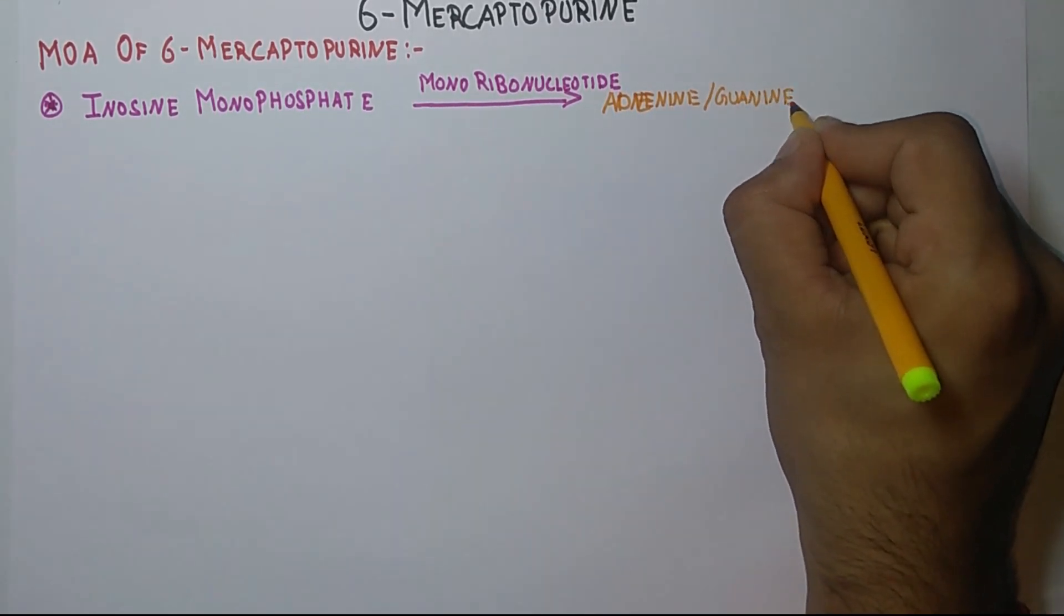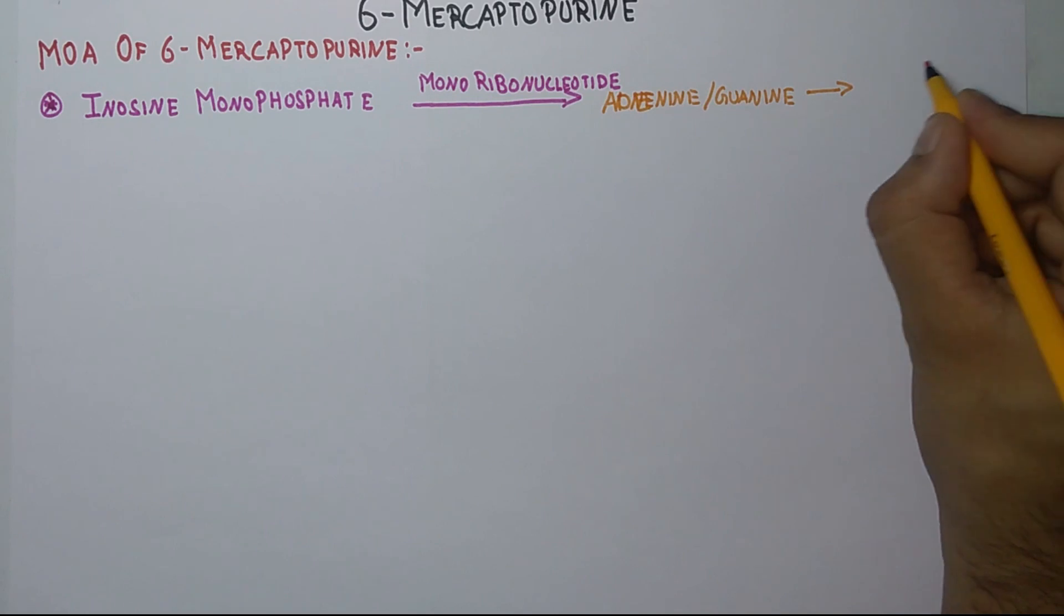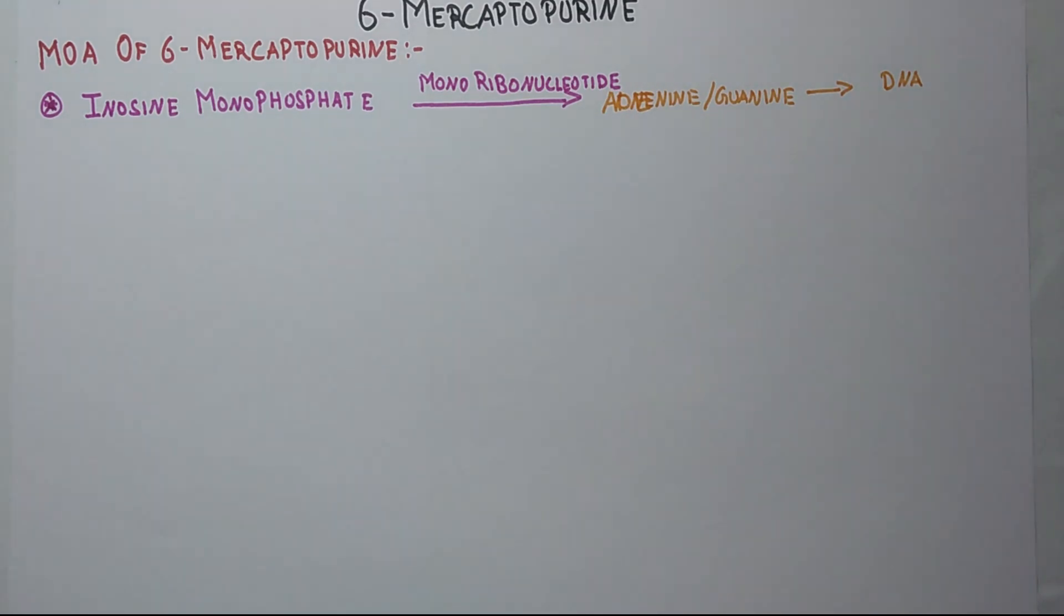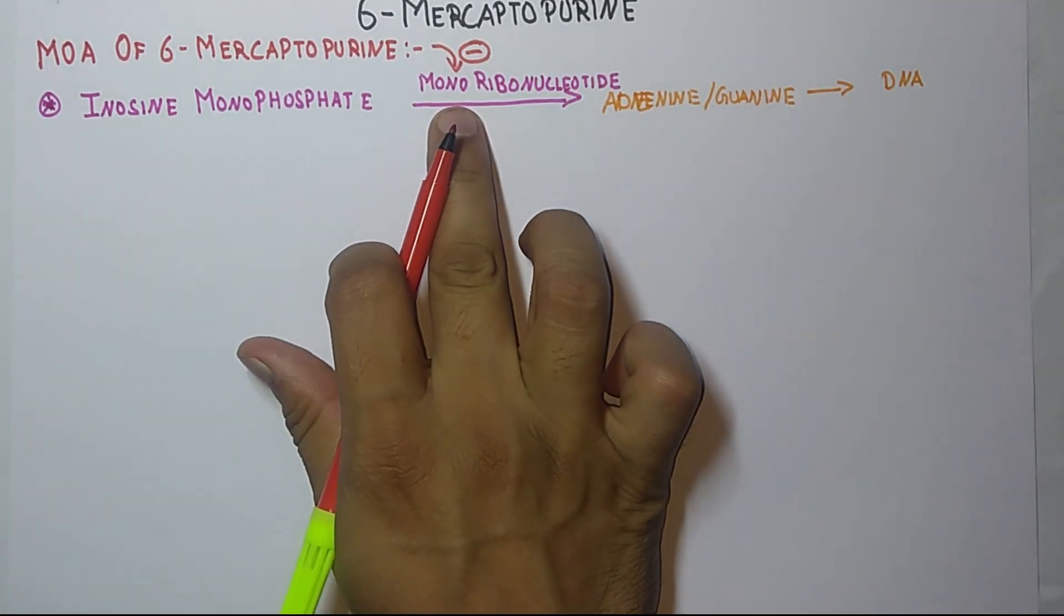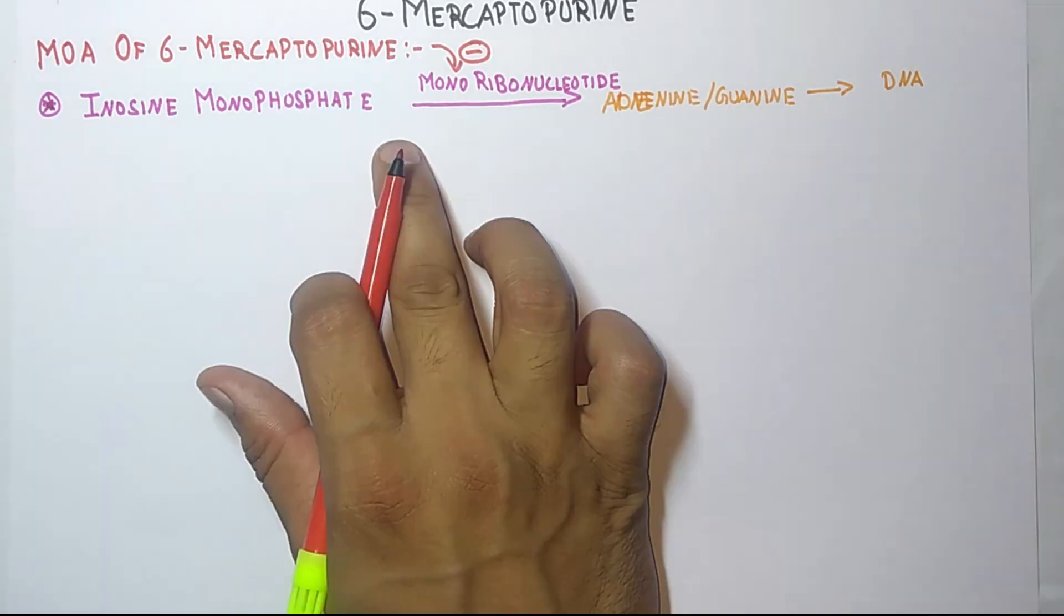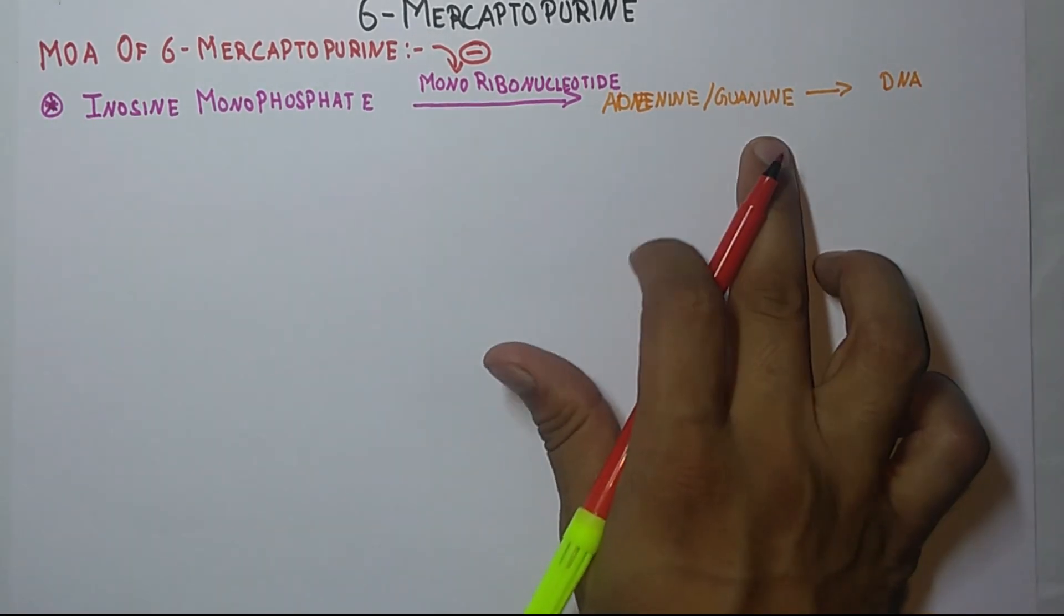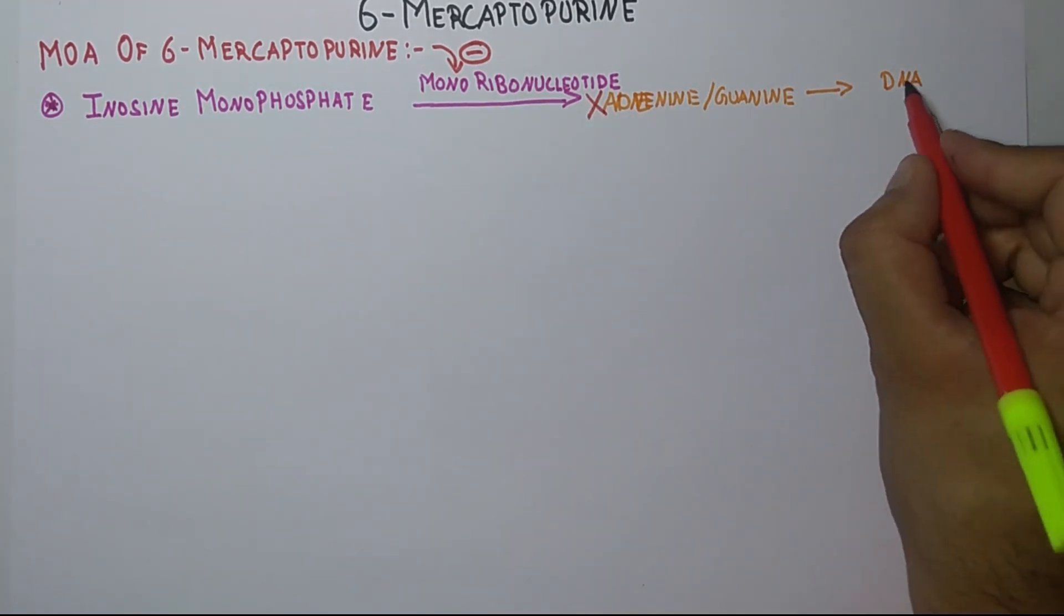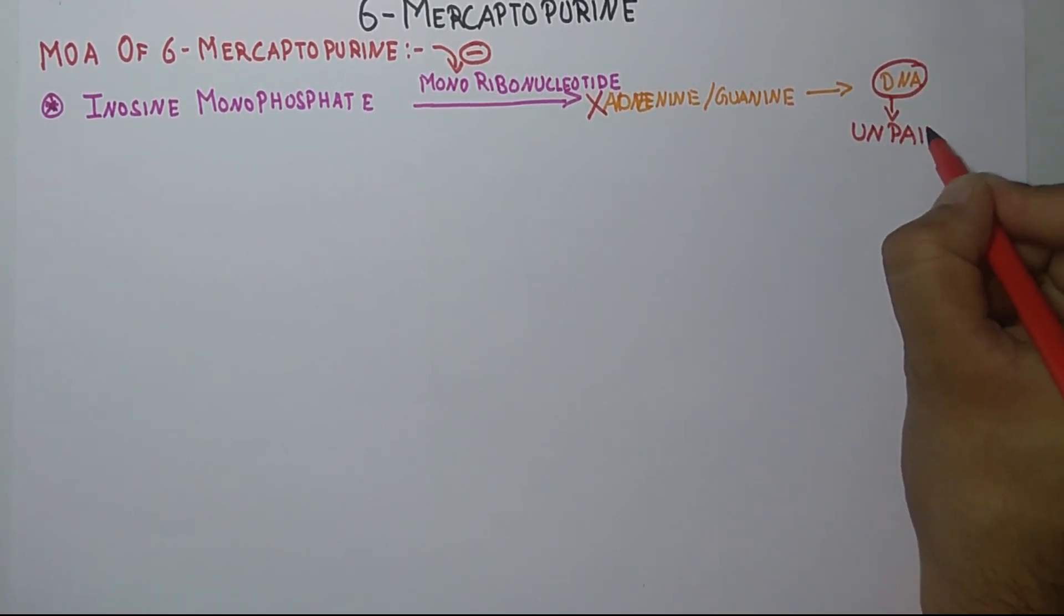These are the base pairs of DNA, and through this DNA gets paired or formed for the upcoming cycle. Now what 6-mercaptopurine does is it inhibits the monoribonucleotide. So if this monoribonucleotide gets inhibited, there will not be any conversion - means inosine monophosphate is not converted into adenine and guanine. So this action will be prevented, and after that DNA gets unpaired and ultimately leads to cell death.